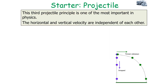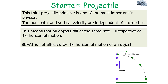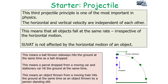The third principle is one of the most important ideas in physics: the horizontal and vertical velocities must be independent of each other. This means all objects fall vertically downwards at the same rate, irrespective of horizontal motion. For example, a ball thrown sideways will hit the ground at the same time as a ball simply dropped. Similarly, a parcel dropped from a moving car and one dropped from a stationary car hit the ground simultaneously, and an object thrown from a moving train hits the ground at the same time as one thrown by a person standing still.